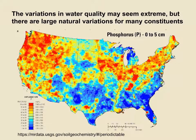Total phosphorus concentrations in highway runoff may be affected by variations in local soil phosphorus. While the variations in water quality may seem extreme, there are large natural variations for many runoff quality constituents. This is a map from the USGS showing the concentrations of phosphorus in the top 5 centimeters of soil in the United States, with colors ranging from less than 200 mg/kg (blue) to more than 1,180 mg/kg (red), in intervals of about 100 mg/kg. Using the median sediment concentration of 42 mg/L with the range of soil phosphorus from 50 to 9,120 mg/kg, natural total phosphorus could range from 0.0021 to 0.38 mg/L, without variability in TSS and without any additional anthropogenic inputs.